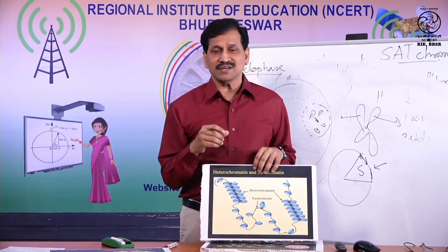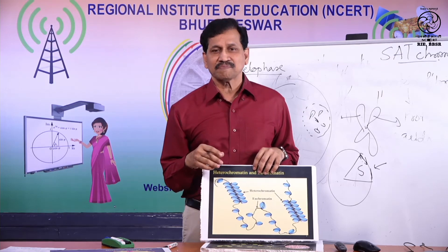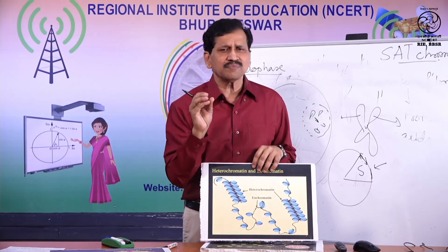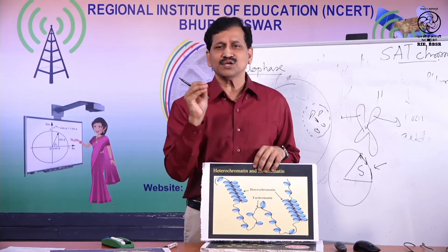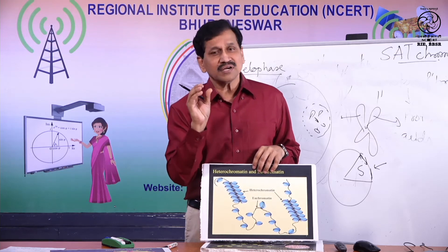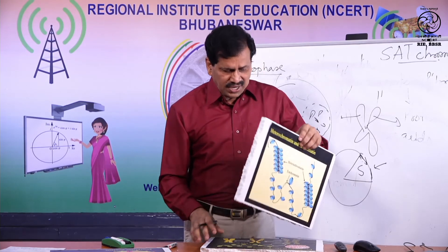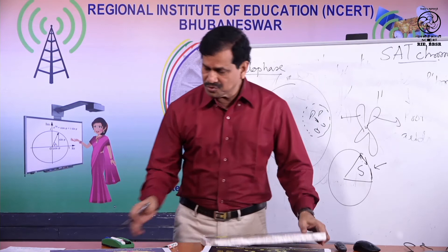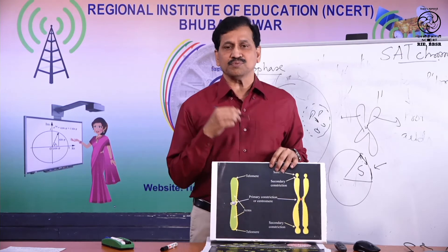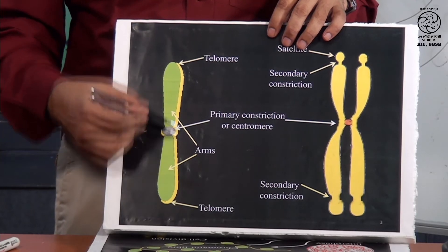Constitutive heterochromatin is fixed in its position on the chromosome. It contains repeated DNA sequences — DNA made up of the four nitrogen bases adenine, guanine, cytosine, and thymine in repetitive sequences. Constitutive heterochromatin is mainly confined to the regions around the centromere and telomeres.